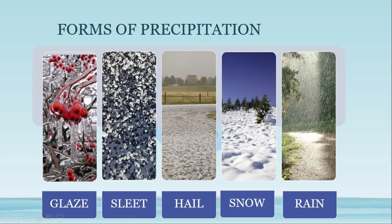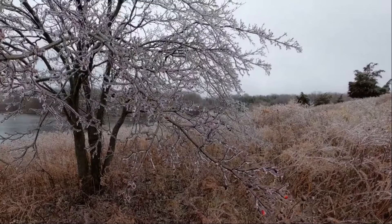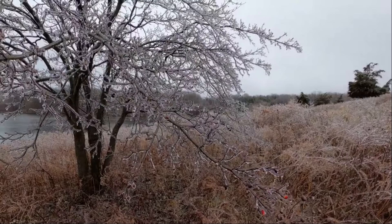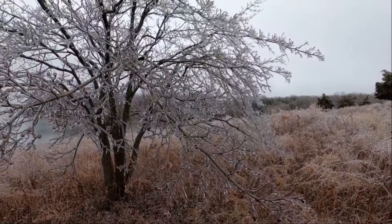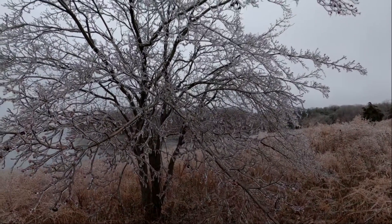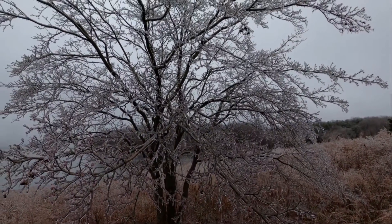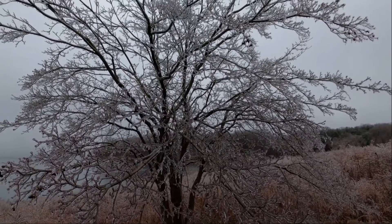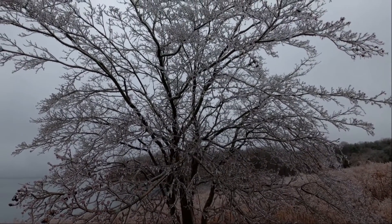Not just rainfall — there are other forms of precipitation as well. The first one is glaze. Water droplets come in contact with the ground, which has a temperature near 0 degrees Celsius or less, and these water droplets freeze, forming an ice coating on the ground surface. These are called glaze.